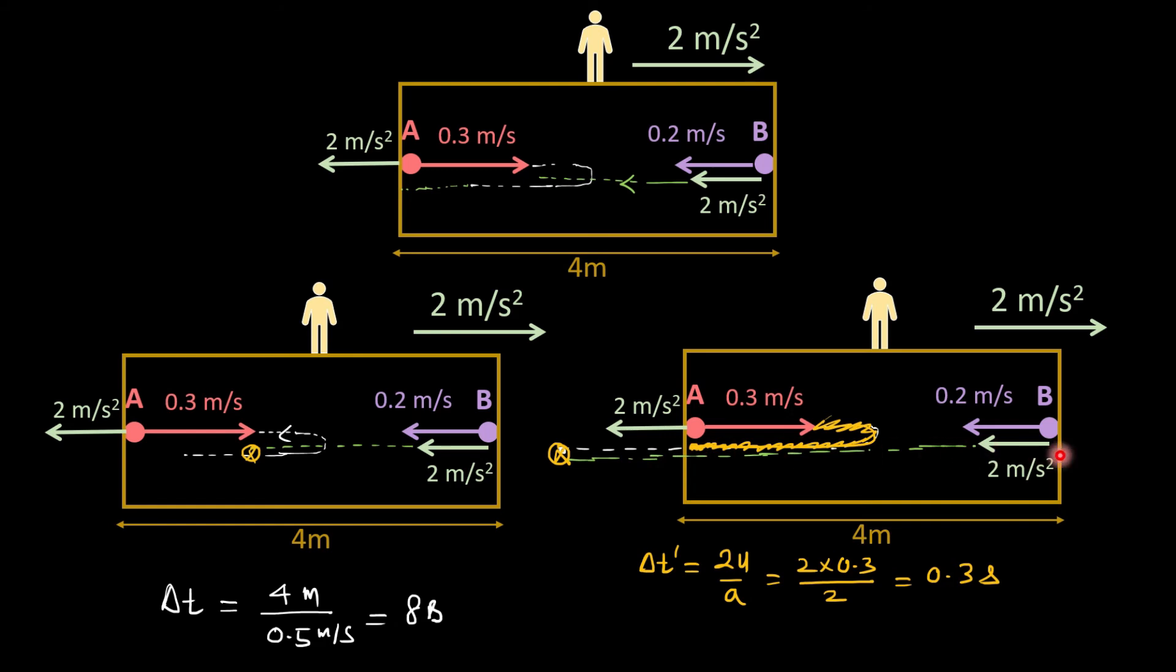And then the collision will happen. We cannot use this formula because once particle A is at rest, we cannot take the case that their relative acceleration is zero. This result has come assuming their relative acceleration is zero, but the relative acceleration will not be zero. After 0.3 seconds, particle A will come to this point and we are assuming that this is a perfectly inelastic wall and the particle will just stick here and stay at rest, and everything is with respect to this rocket. But particle B still has acceleration 2 meters per second squared, so their relative acceleration will not be zero. So the answer from this way is wrong.